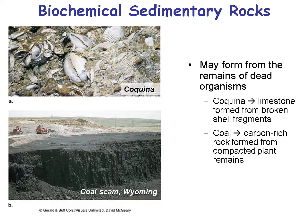Here's coquina at the top — limestone formed from broken shell fragments — and a coal seam at the bottom, carbon-rich rock formed from compacted plant remains. A very different environment created each: one a reef environment, one a swamp environment. Coquina would not have been transported very far — those shells would have been tiny pieces if transported a great distance. Those shells were generated close to where they were lithified. This gets us back to the three stages: generation, transportation, lithification. Coquina is a good example of minimal transportation.